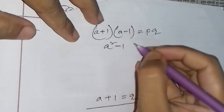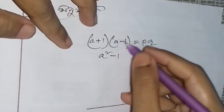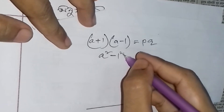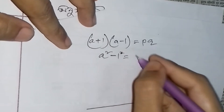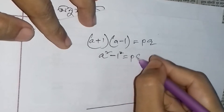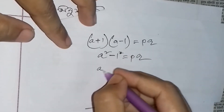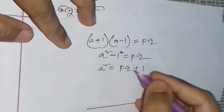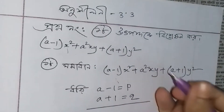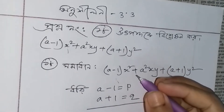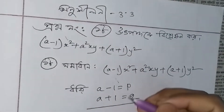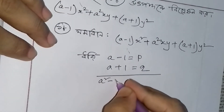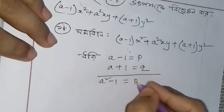Ehtara hoshe a square minus b square-e shutra: (a plus b) into (a minus b) = a square minus b square. Ehi a square equal pq plus 1, ehtara havhe. Taha halen a square minus 1 = pq, a square-er maan havhe pq plus 1. Jokhan amurah ehtara gung kori bho, a square minus 1 equal pq.